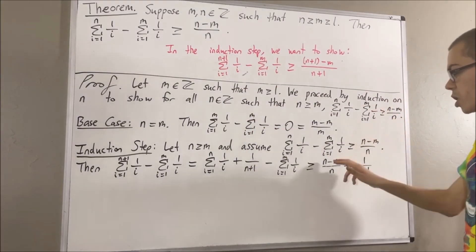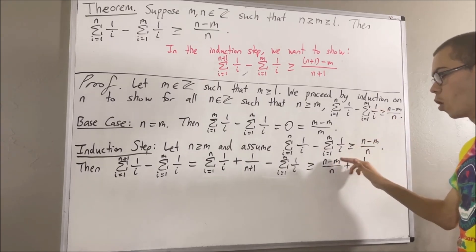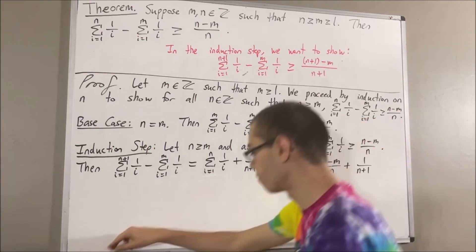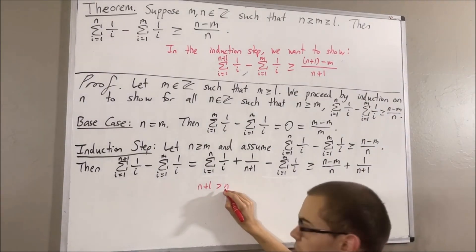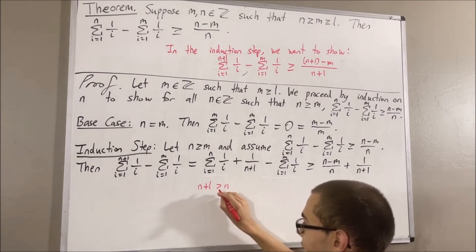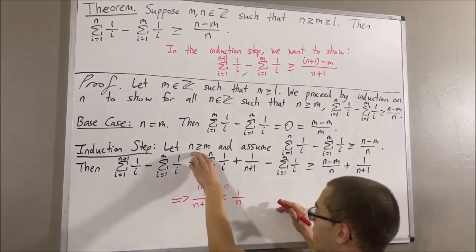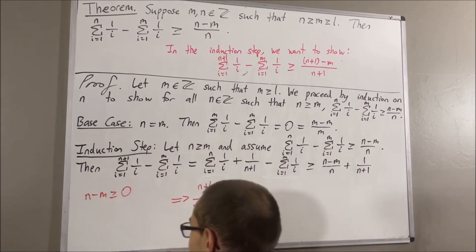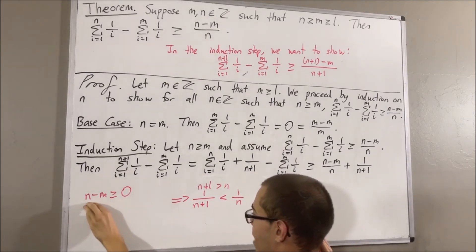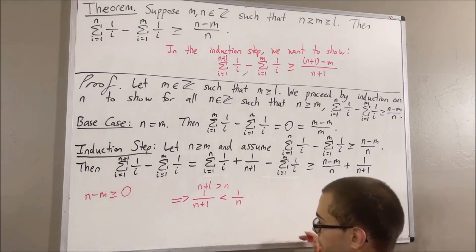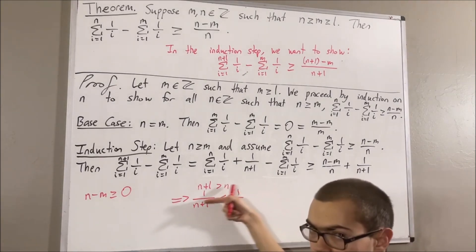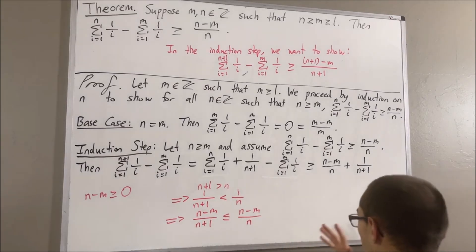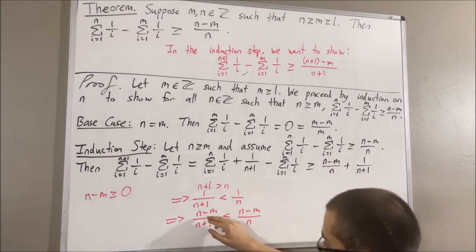Now, it turns out we can show that n minus m over n is greater than or equal to n minus m over n plus 1. To see how: we know that n plus 1 is greater than n. And since these are both positive, it follows that 1 over n plus 1 must be less than 1 over n. Then, since n minus m is greater than or equal to 0, if we multiply n minus m on both sides of this inequality, the direction of the inequality will still be the same. So, we have shown that n minus m over n is greater than or equal to n minus m over n plus 1.